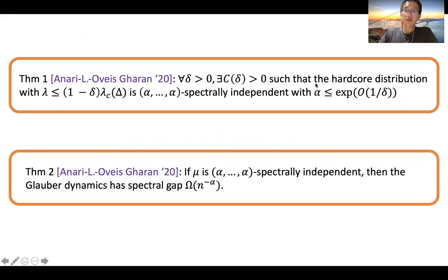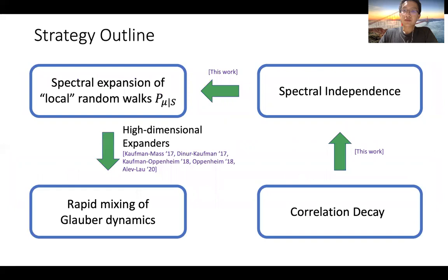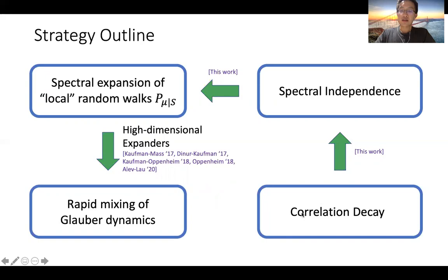Let me summarize our main results and strategy. We show that the hardcore distribution for lambda below the critical threshold is spectrally independent. Then we show that spectrally independent distributions have rapidly mixing Glauber dynamics. The strategy uses high-dimensional expanders to reduce rapid mixing of Glauber dynamics to spectral expansion of exponentially many local random walks, where each local random walk corresponds to a conditional distribution of mu. We use spectral independence to get spectral expansion of these local random walks, and use the correlation decay method to obtain spectral independence.